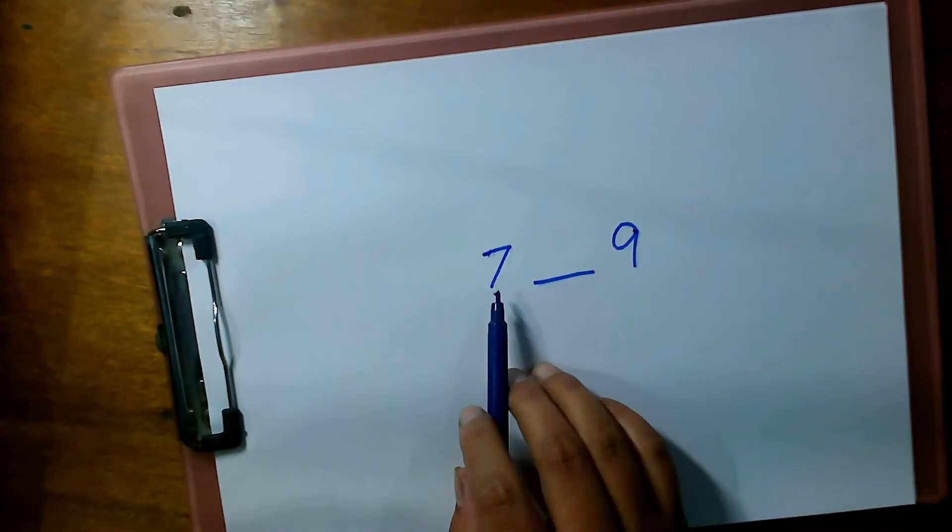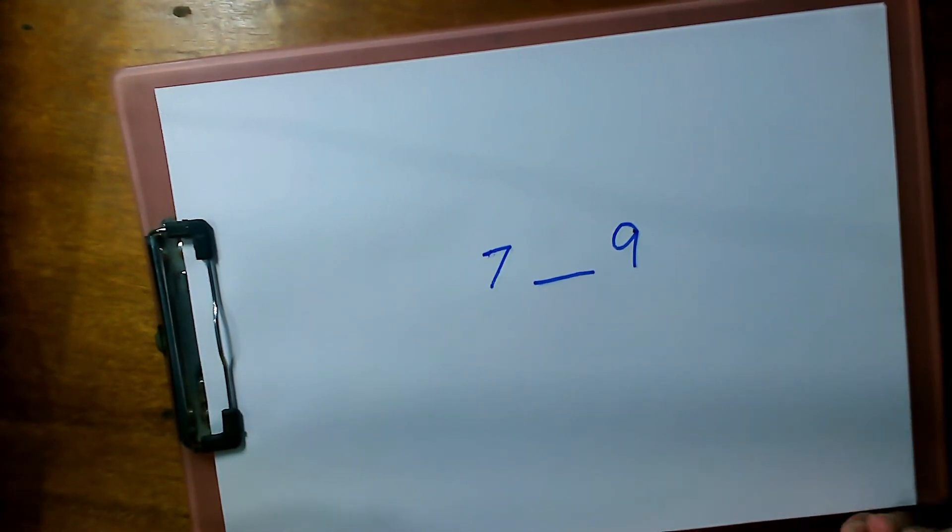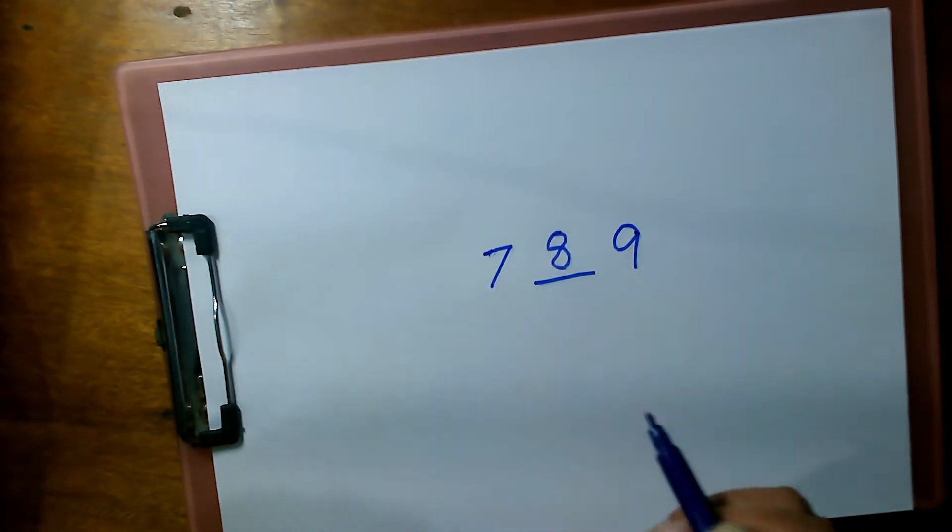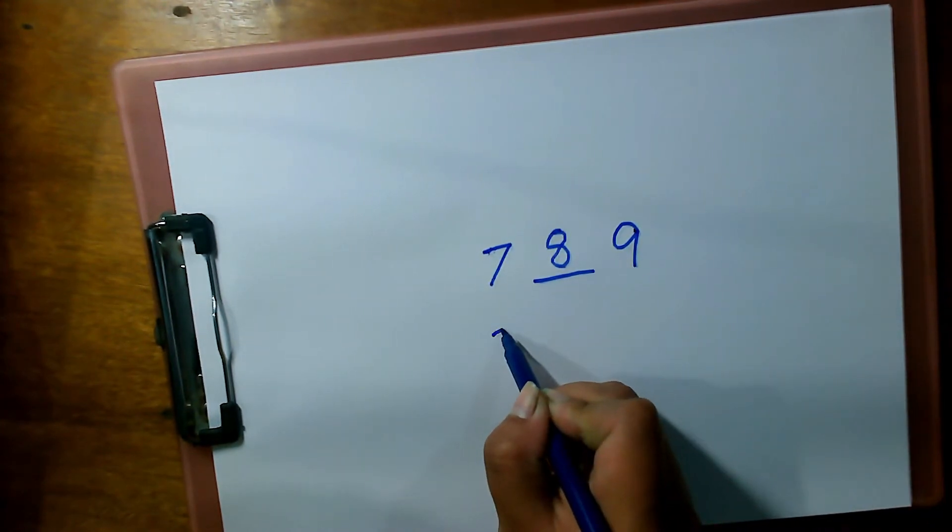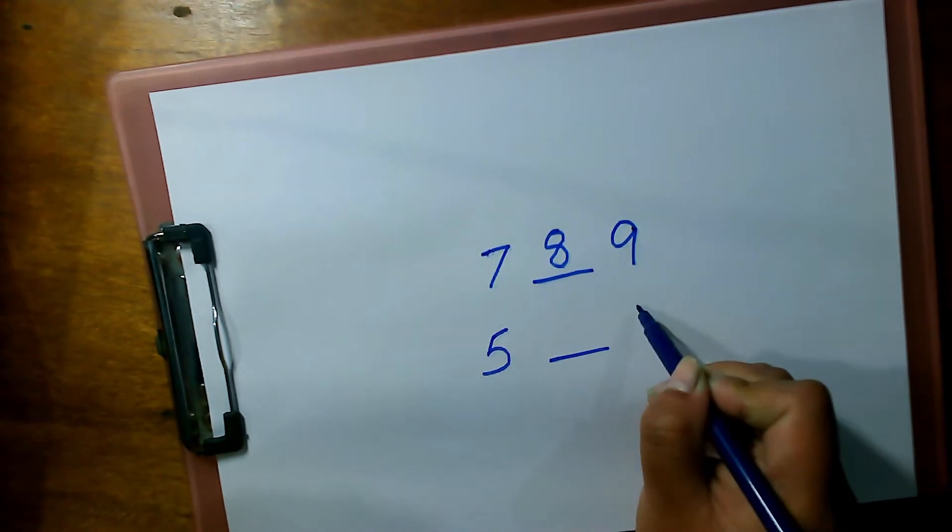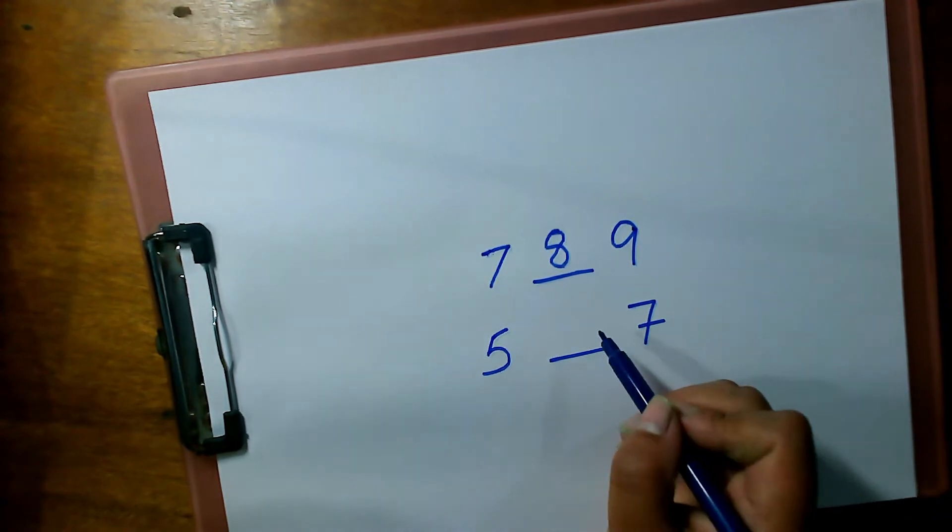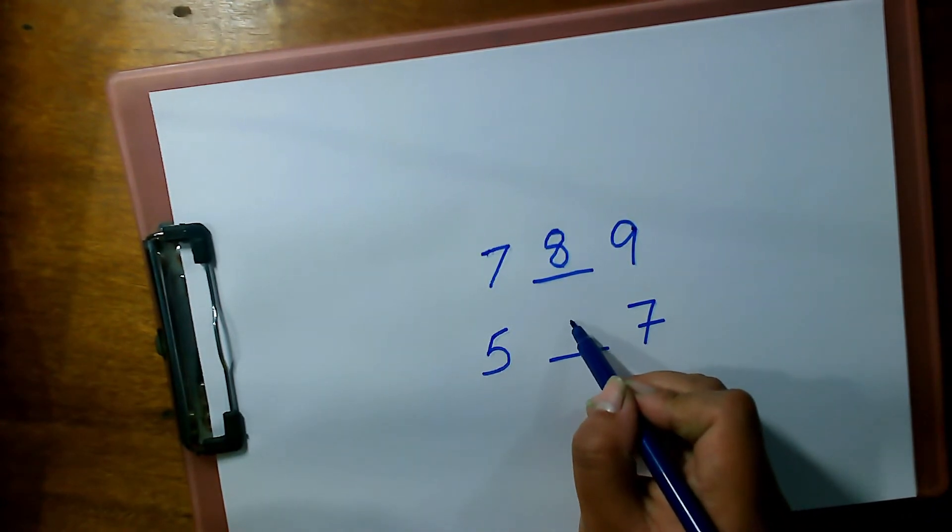What comes between seven and nine? Number eight. And what comes between five and seven? Number six. Six.